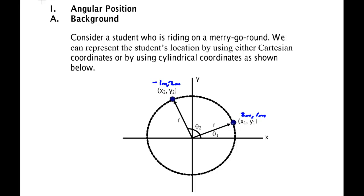It makes sense to describe the location of a particle by how the angle changes and where the angle is. For instance, this angle might be more than pi over two — maybe two pi over three radians — whereas the starting position might be some other value. The idea is just to describe positions by an angle rather than by x and y.